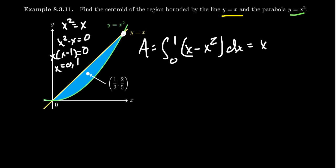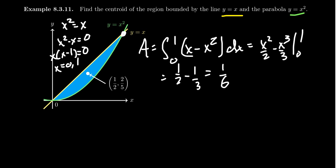This integral is not so bad. We get x squared over 2 minus x cubed over 3 from 0 to 1. We get 1 half minus 1 third, which is 1 sixth. That's going to be the area of this region. And therefore, notice 1 over a is going to equal 6. We're going to use that in our calculation.